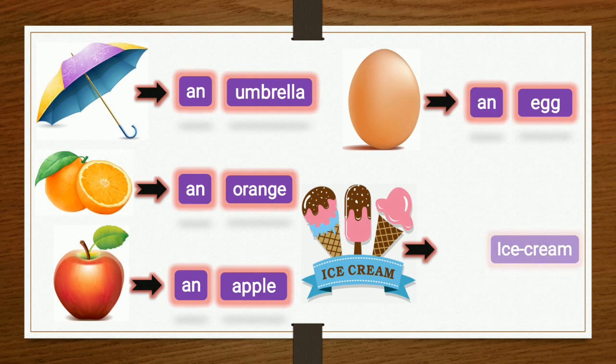Last one is ice cream. Ice cream — you all love ice cream, yes or no? The beginning letter is I, so we use AN. An umbrella. An orange. An apple. An ice cream. An egg.